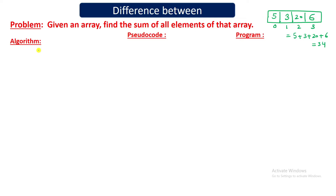So how do we write the algorithm? Basically, an algorithm can be written in any natural language. What do I mean by natural language? Natural language means you can write the algorithm in English, in Hindi, or in any other language that you know — for example, Marathi.